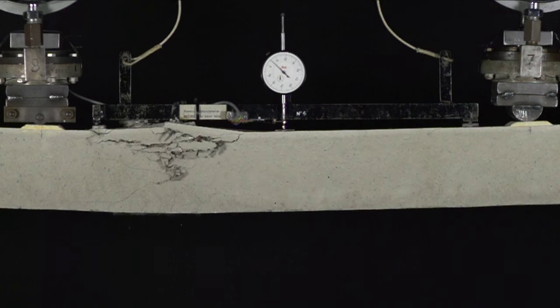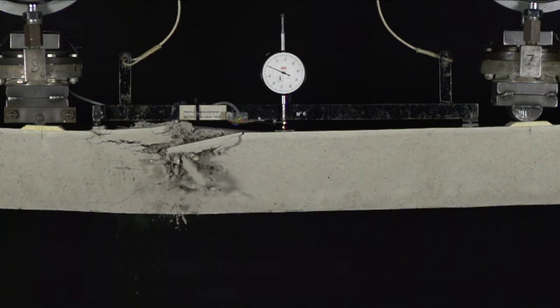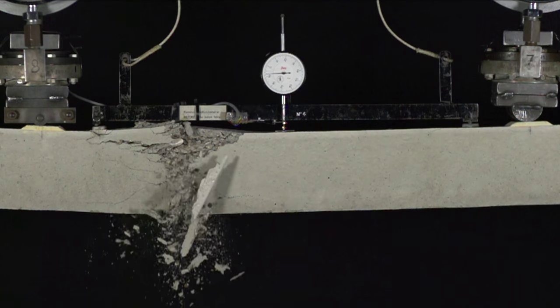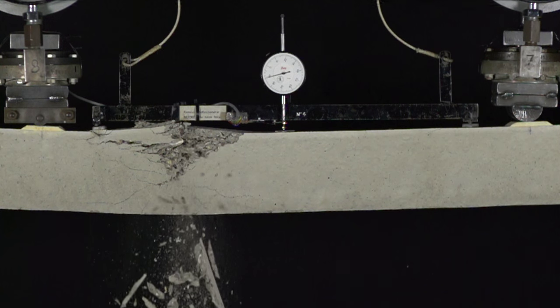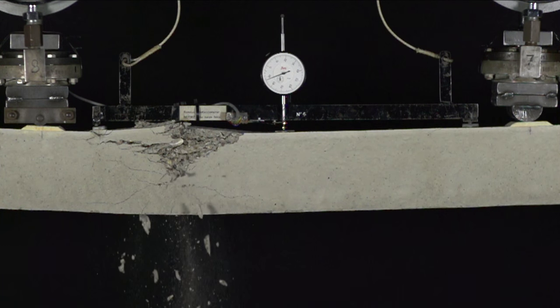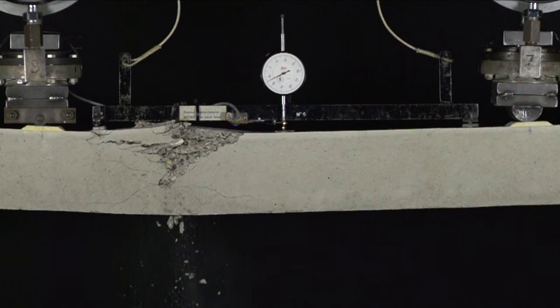Because we have heavily reinforced the lower part of the beam which allows a large amount of tension to be carried, the same large amount of compression needs to be carried by the concrete near the top. This causes the concrete to crush before the steel has a chance to yield.